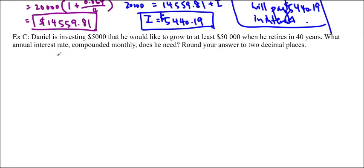Okay. So, basically, P is equal to $5,000. A is equal to $50,000. N is equal to 40 times 12 because we're compounding monthly.